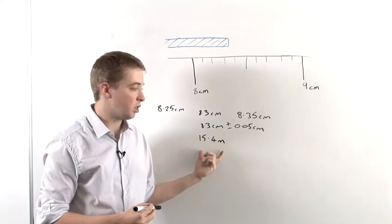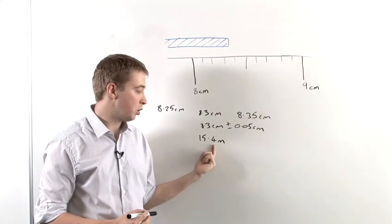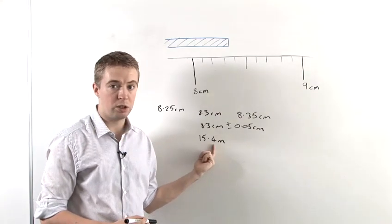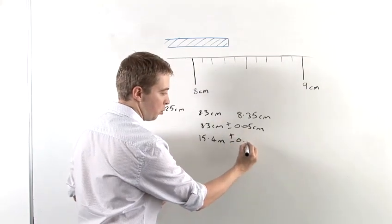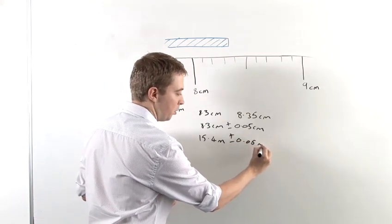Now, in this case, the uncertainty is going to be different because it's measured to that one decimal place of a meter. So that's going to be plus or minus 0.05 meters.